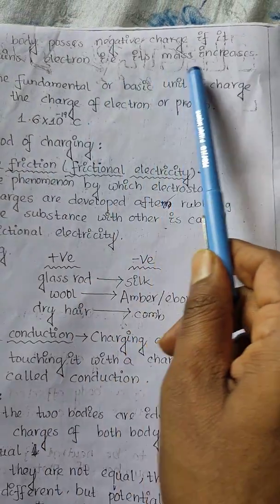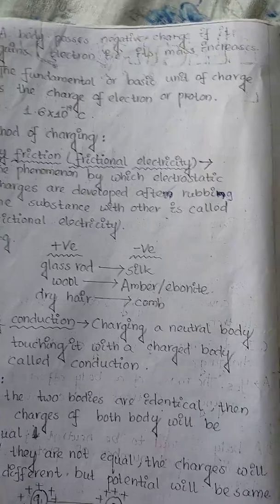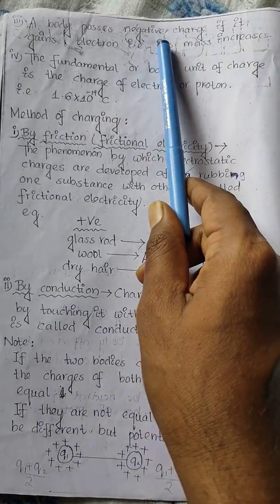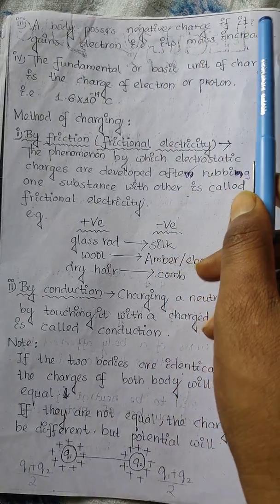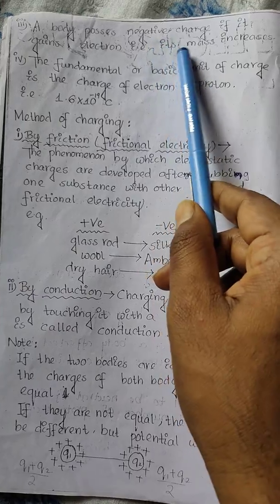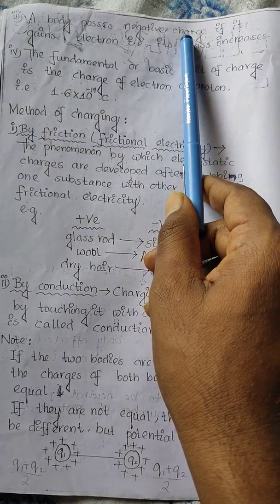If a body possesses negative charge, it gains electrons, so its mass increases. A negatively charged body means electrons are gained. Since electrons carry negative charge, the body becomes negatively charged and the mass increases.